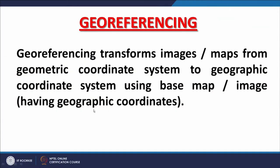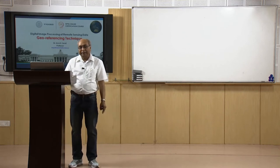The entire concept in digital image processing and GIS is based on coordinate geometry. The geometric coordinate system is transformed to geographic coordinate system using a base map or image with geographic coordinates. You require a base map, ground control points collected using GPS or differential GPS, or a master image which is already georeferenced. The raw image in the geometric domain can then be transformed by collecting GCPs.